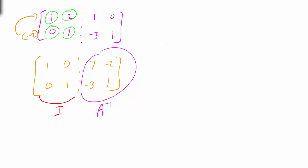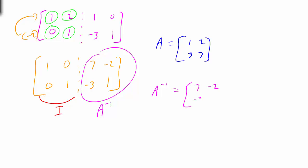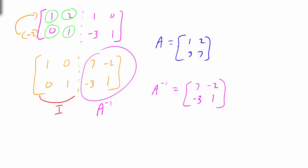So from the original, A was equal to [1, 2, 3, 7], and the inverse is equal to [7, negative 2, negative 3, 1]. If you were to multiply these two together, you would end up with the identity matrix. It also doesn't matter which order you multiply — A times A inverse, or A inverse times A — either way you end up with the identity.